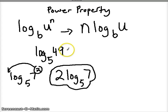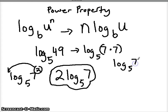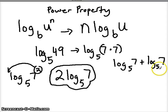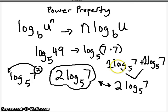Now if we decided to use the product property instead, we could rewrite this as log base 5 of 7 times 7. Then we use our product property and say log base 5 of 7 plus log base 5 of 7. Since we have like terms, we combine them — how many log base 5 of 7s do we have? One and one. So combining like terms gives us 2 log base 5 of 7 — the same exact answer. This is a little bit longer than using the power property, but you end up with the same result.